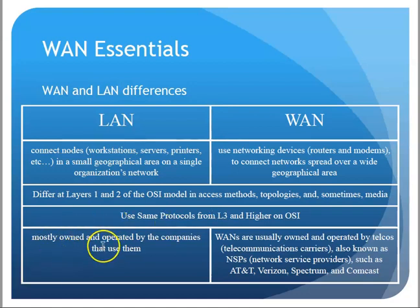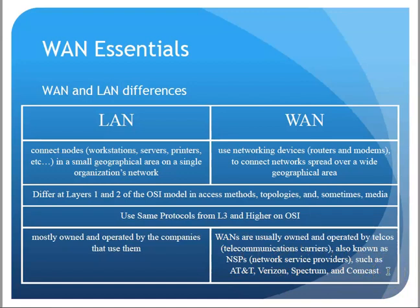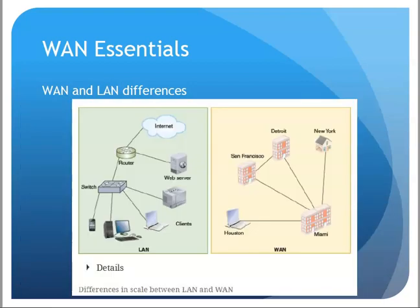LANs are typically owned by the company itself — the equipment in the building is purchased by that company to connect its computers and phones. WANs, on the other hand, involve renting or leasing connections between sites, such as a Harrisburg site and a Philadelphia site. That connection is typically leased from a network service provider — big names like AT&T, Verizon, and Comcast — and it may use a variety of techniques to connect those sites.